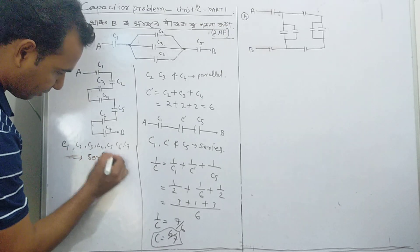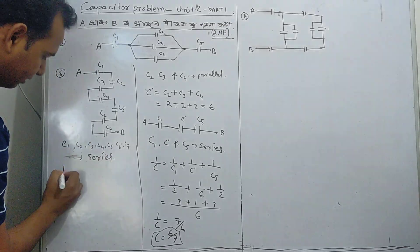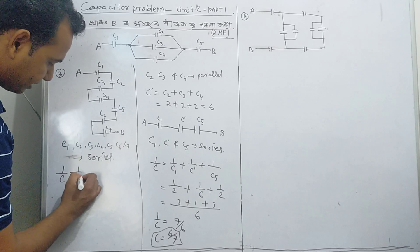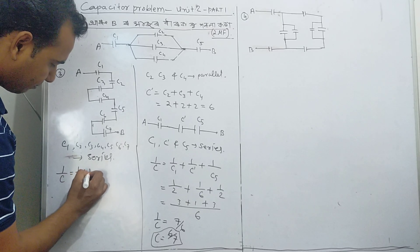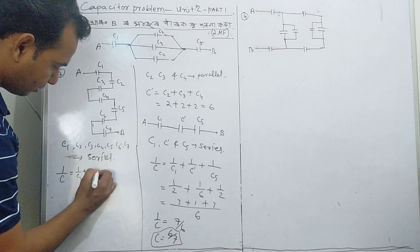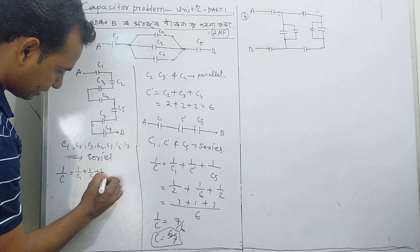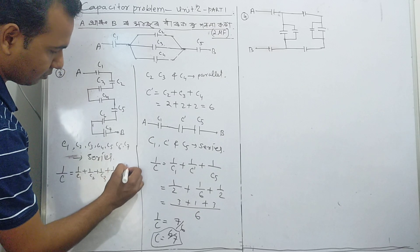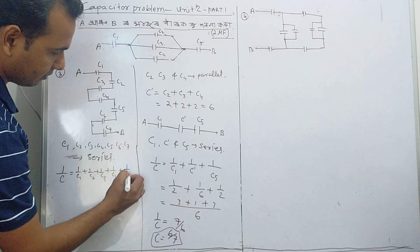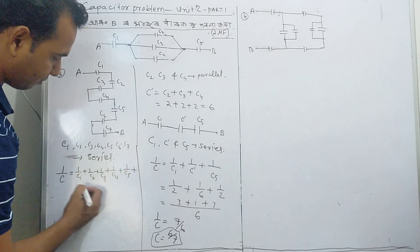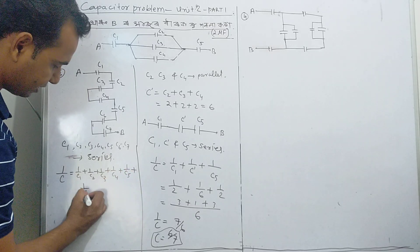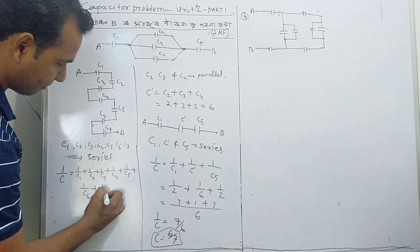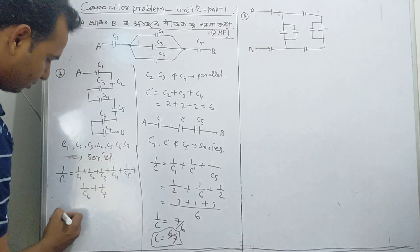The series formula is simple: 1 by C equal to 1 by C1 plus 1 by C2 plus 1 by C3 plus 1 by C4 plus 1 by C5 plus 1 by C6 plus 1 by C7. So 1 by C equals half of the total.